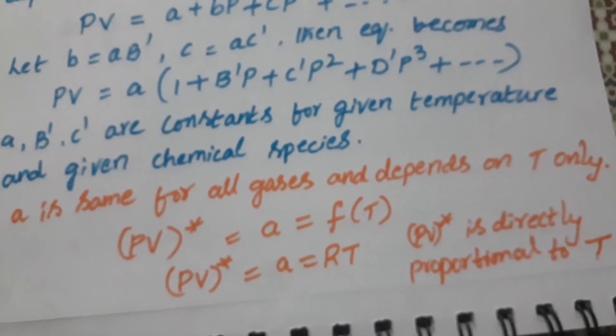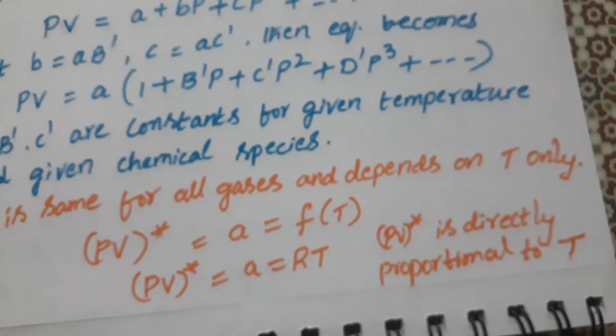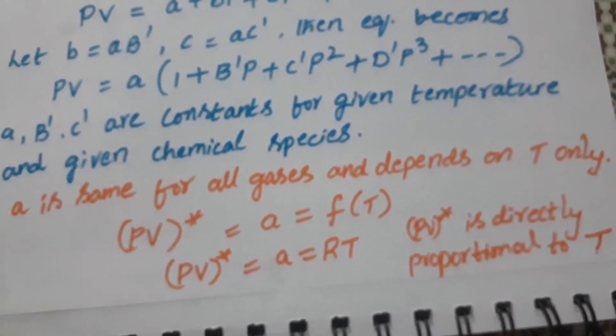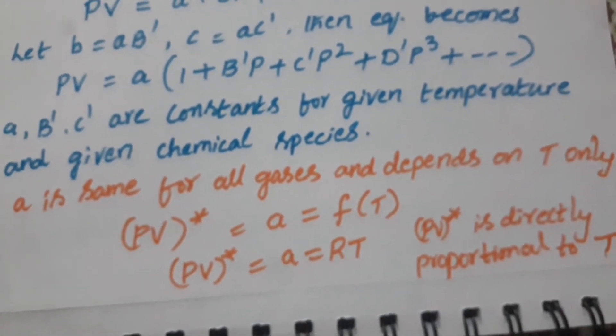A is same for all gases and depends on temperature only. So that is why we can write this PV as PV* is equal to A which is a function of temperature.